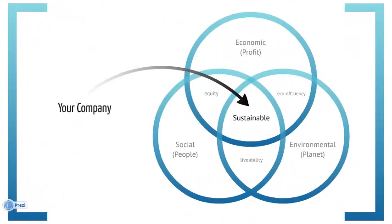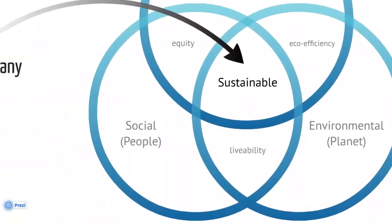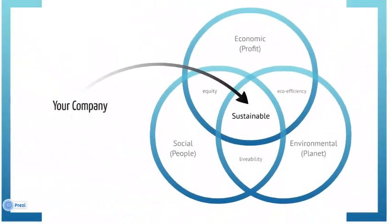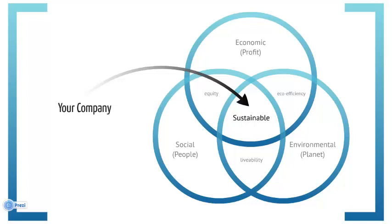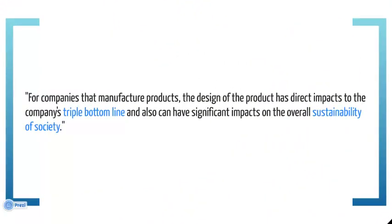Sustainability is specific to an organization with a focus on improving economic, environmental, and social performance. Another way to think about this is people, planet, and profit, or the triple bottom line. Each of these aspects are interconnected and directly affect performance in each area. For companies that manufacture products, the design of the product has direct impacts to the company's triple bottom line and also can have significant impacts to the overall sustainability of society.